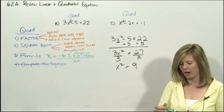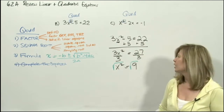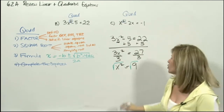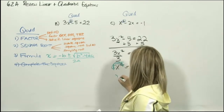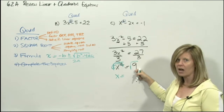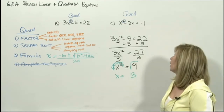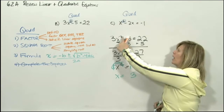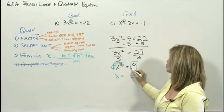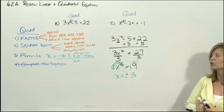Step 2: square root both sides. Squares and square roots are inverse operations, so they cancel. x equals the square root of 9, which is 3. But wait — a square means there must be two answers, so when you square root, the answer is both positive and negative 3. And there are your two solutions.